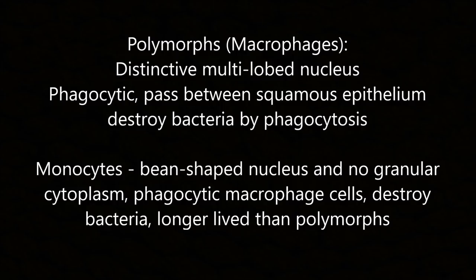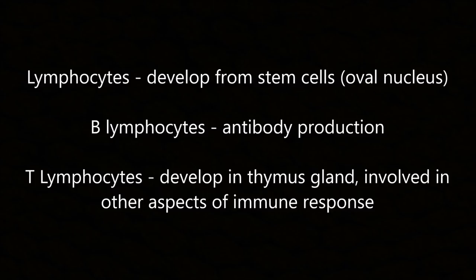Polymorphonuclear cells (macrophages) have a distinctive multi-lobed nucleus and are phagocytic; they pass between squamous epithelium cells and destroy pathogens via phagocytosis. Monocytes have a bean-shaped nucleus and no granules in the cytoplasm; they are also phagocytic with macrophage-like cells that destroy bacteria, and are longer-lived than polymorphonuclear cells.